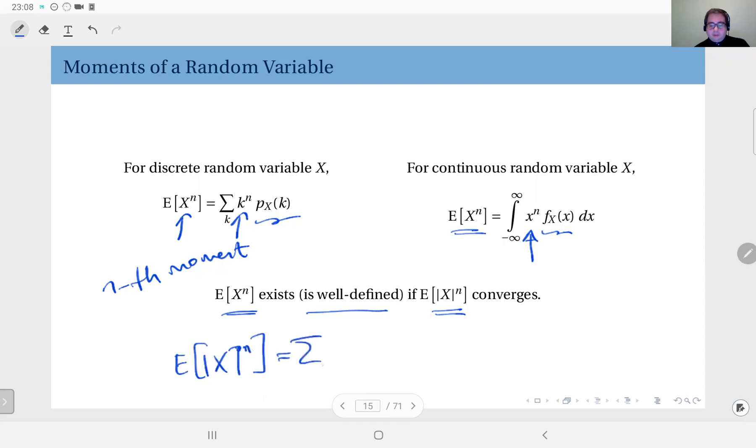That would be over the entire real line, that would be the absolute value of k to the power n, the pmf.